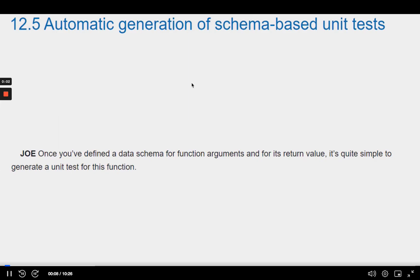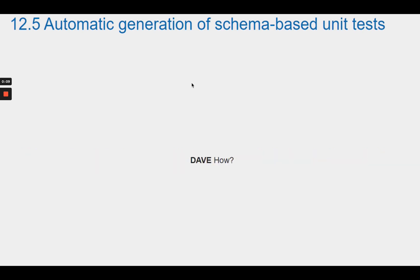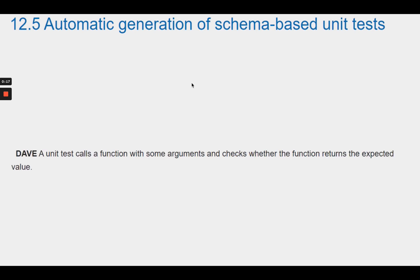Joe explains that once you've defined a data schema for function arguments and for its return value, it's quite simple to generate a unit test for that function. Dave asks how. Joe says to think about it: the essence of a unit test for a function is that it calls a function with some arguments and checks whether the function returns the expected value.